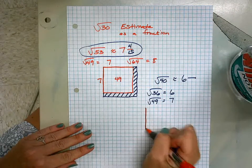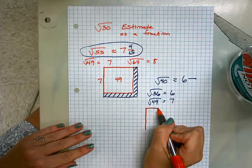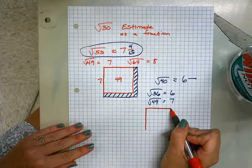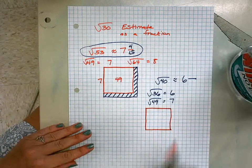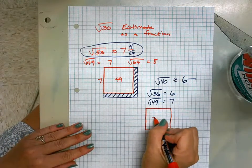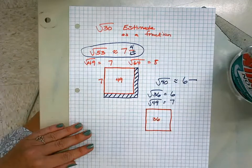1, 2, 3, 4, 5, 6. 1, 2, 3, 4, 5, 6. Here's our 6 by 6 square. So this is my area of 36. The square root of that is 6.